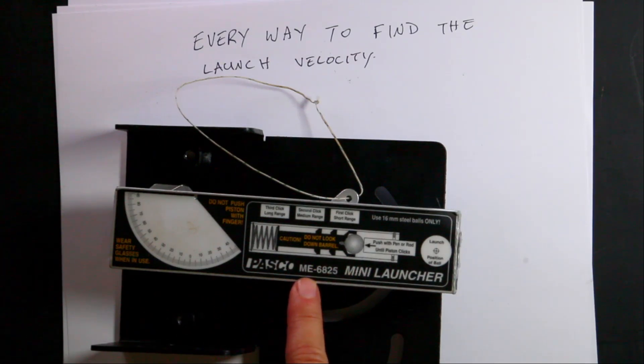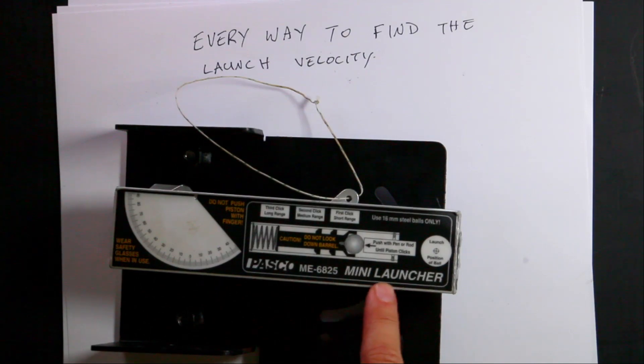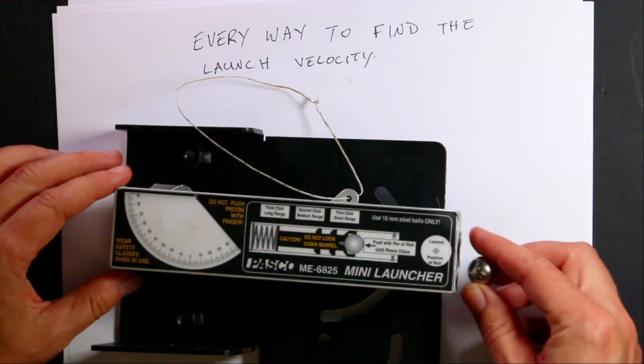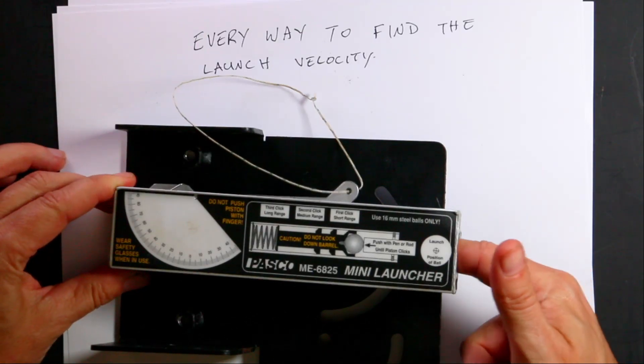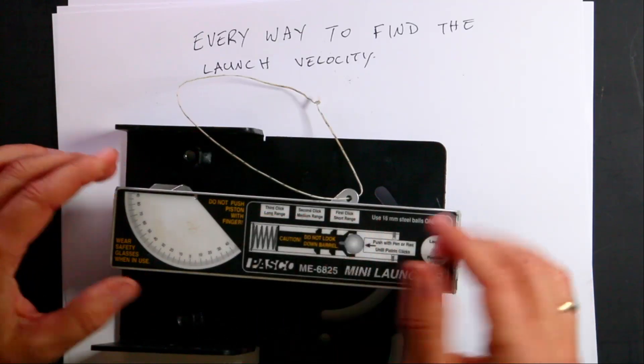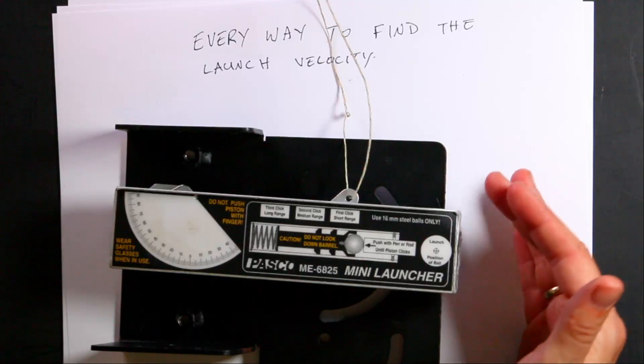This is the PASCO ME6825 Mini Launcher. It's a pretty good device. It takes a little ball like this, you push it in right here and you can put it at different range settings and then when you pull this out it shoots the ball out.